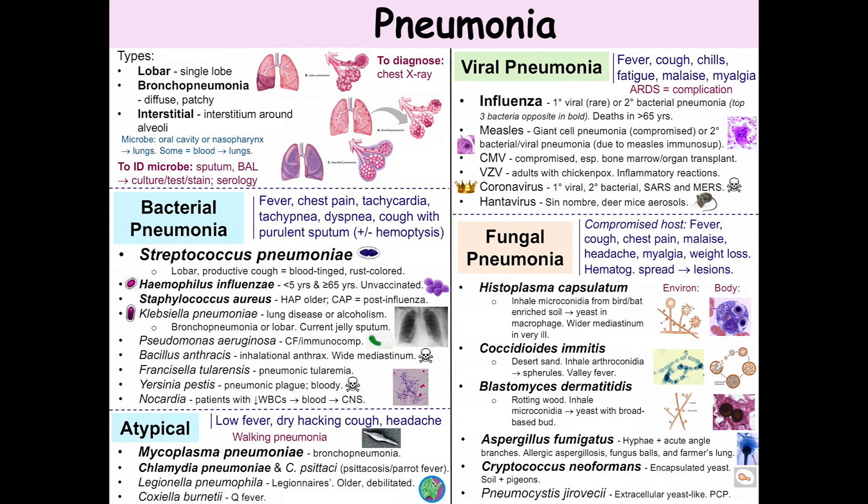Atypical pneumonia is atypical because the patient tends to look good. They may not have a fever at all. They have a dry, hacking cough instead of a purulent, productive cough. We call this walking pneumonia.